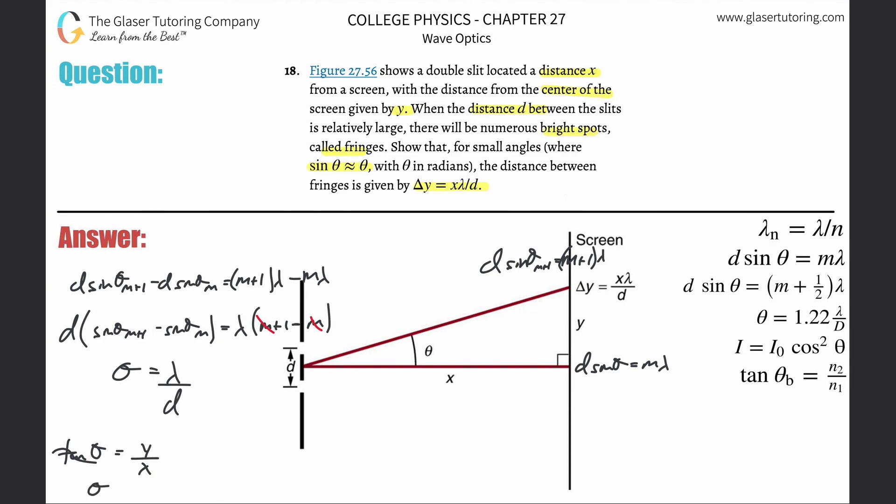And what I can then do is take this and plug that in. When I do that, it's then y over x equals λ over d. Cross multiply that x, and therefore we're going to have xλ over d, and there's that formula. Alright, so guys, thanks for tuning in, hope that helped, and I'll see you in the next one. Take care.